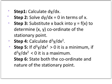Or d²y/dx² might be less than zero, which means it's a maximum. And then to finish the problem off — step six — we state the coordinate and the nature of the stationary point.